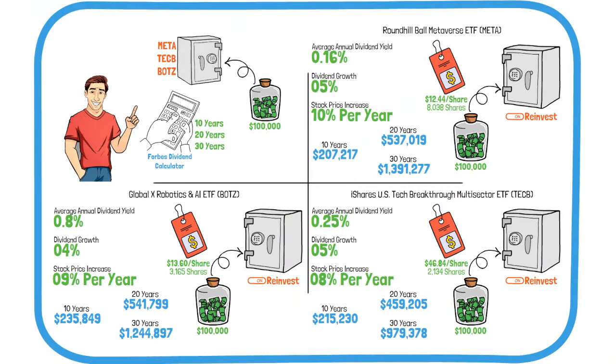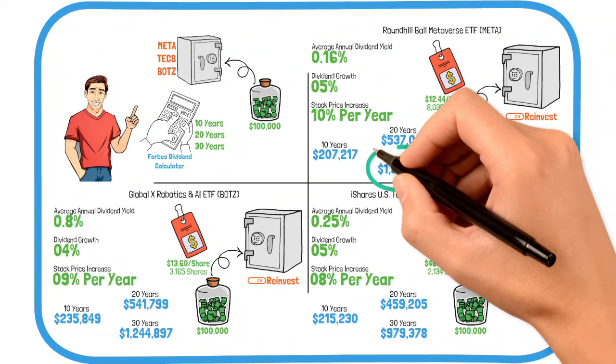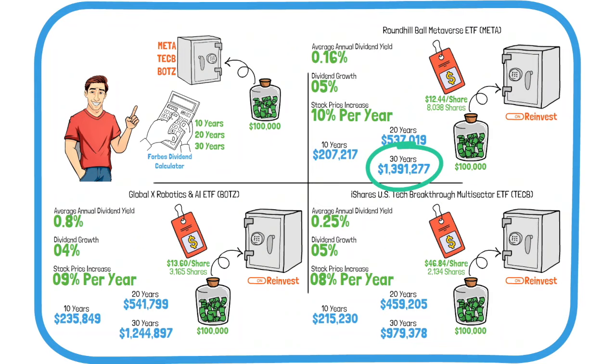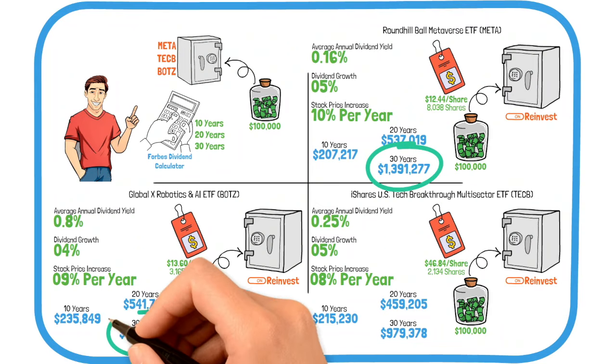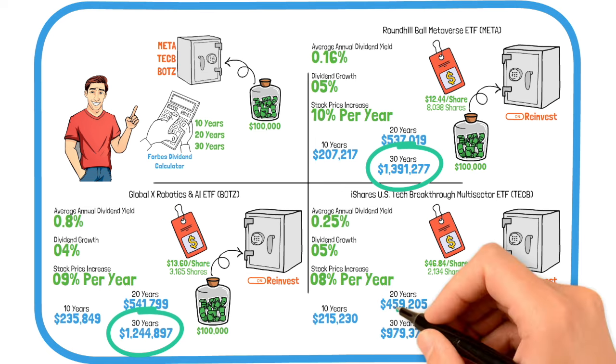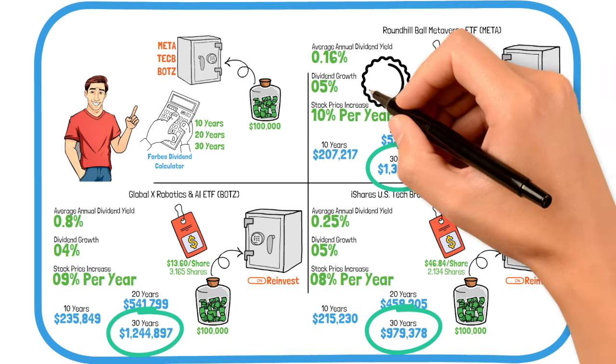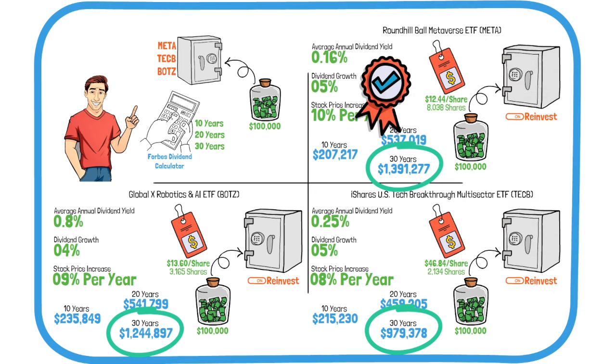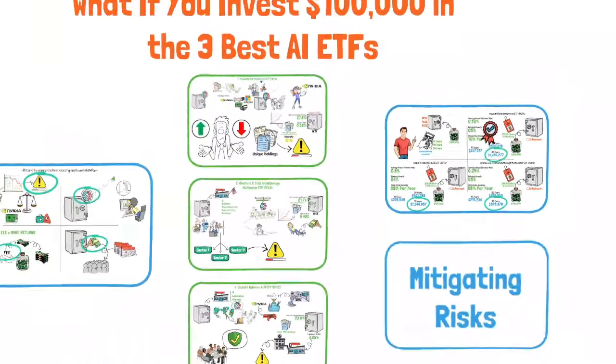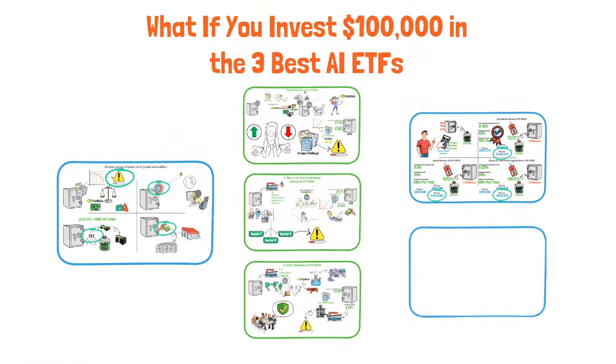Comparing the potential returns of these ETFs over a 30-year period, META stands out with an impressive $1.39 million, followed by BOTZ with $1.2 million, and TECB with $900,000. These projections highlight the substantial growth potential of each ETF over a long-term horizon. While META shows the highest potential returns due to its aggressive focus on the metaverse and AI, BOTZ and TECB offer balanced growth with broad diversification.